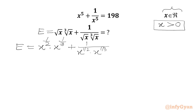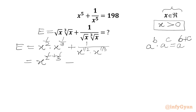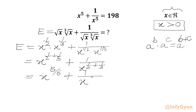Now we will apply one powerful exponential law: a^b · a^c = a^(b+c). So we are going to add the exponents. We write x^(1/2 + 1/3) + 1/x^(1/2 + 1/3). Adding the two fractions, 1/2 + 1/3 = 5/6, so we get x^(5/6) + 1/x^(5/6).